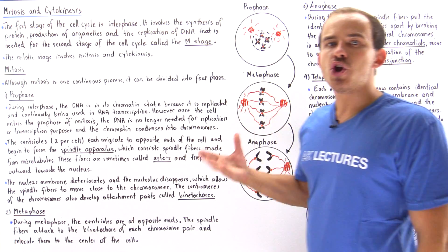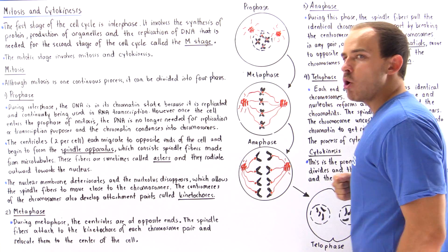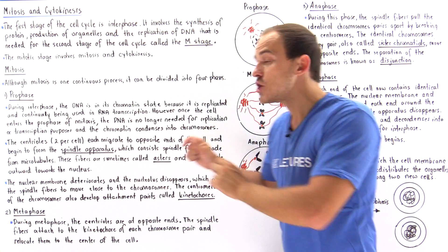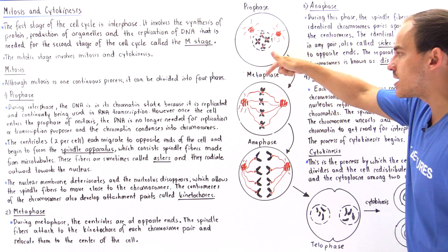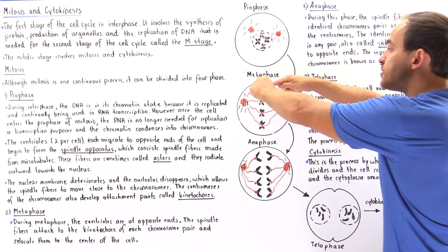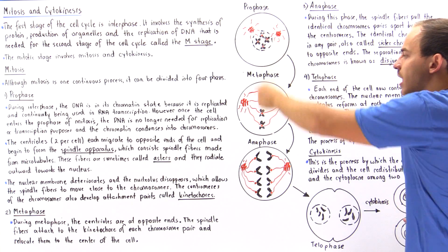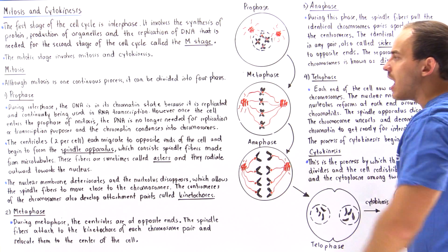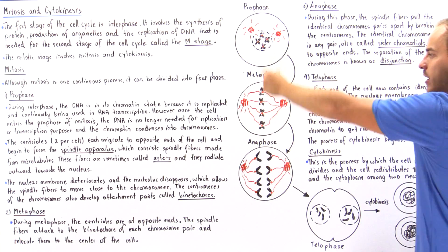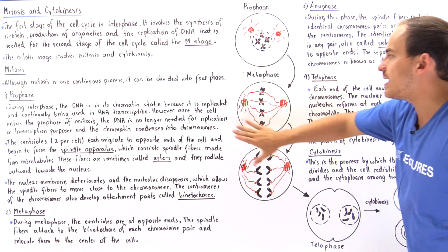Now let's move on to the second phase known as metaphase. In metaphase, the two centrioles have moved to opposite poles of the cell. The spindle fibers radiate outward and attach onto the kinetochore of the centromere of our chromosome pairs. These spindle fibers move our chromosomes to the center of the cell and align them on the equatorial line, and this alignment of chromosomes along the equatorial plate is metaphase.